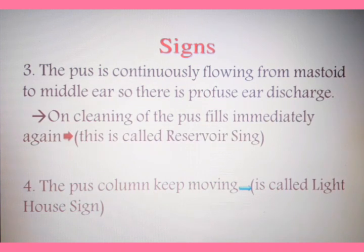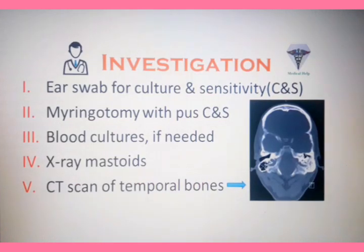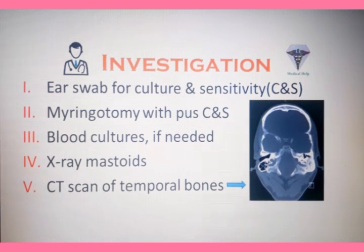Another sign: pus is continuously flowing from the mastoid to the middle ear, resulting in profuse ear discharge. If you clean the pus, it flows immediately again — this characteristic is called the reservoir sign. The pus column keeps moving always, so it is called the lighthouse sign. We should remember these two signs — reservoir sign and lighthouse sign — seen in acute mastoiditis.